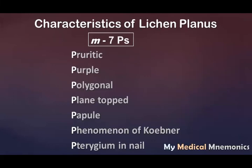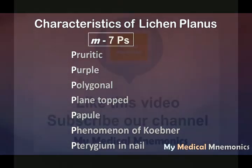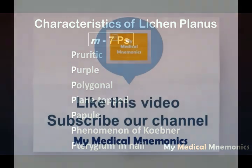So these seven P's — pruritic, purple, polygonal, plain top, papular, phenomenon of Koebner, and pterygium — help you remember the characteristics of the skin disorder lichen planus.